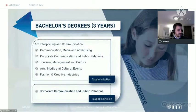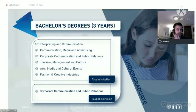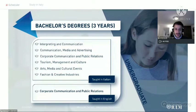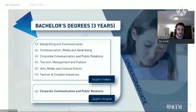Now let's move to the academic offer. At bachelor level, we have three-year bachelor's degrees. We have one course completely held in English: Corporate Communication and Public Relations. Then we have six courses held in Italian: Interpreting and Communication, Communication Media and Advertising, Tourism Management and Culture Arts, Tourism, Media and Cultural Events, and Fashion and Creative Industries.